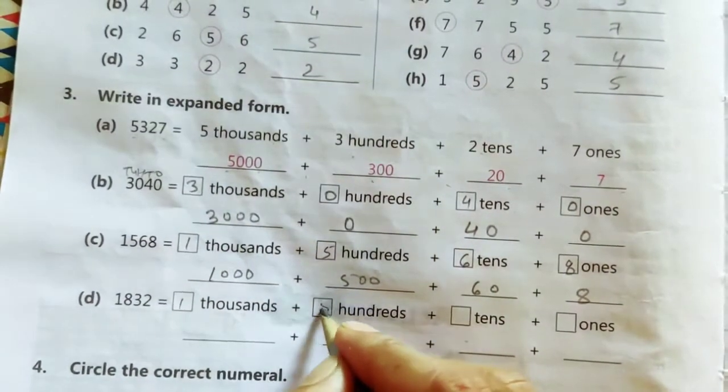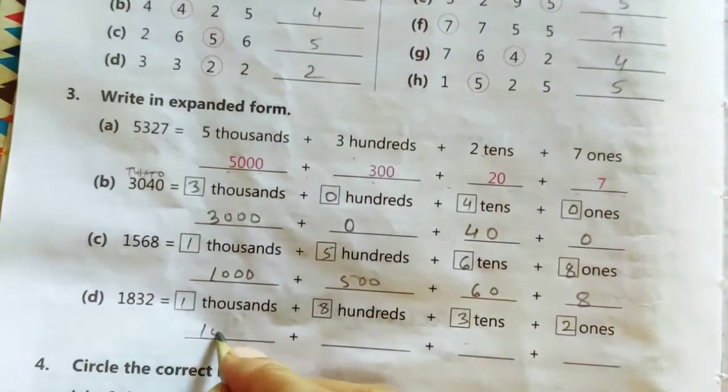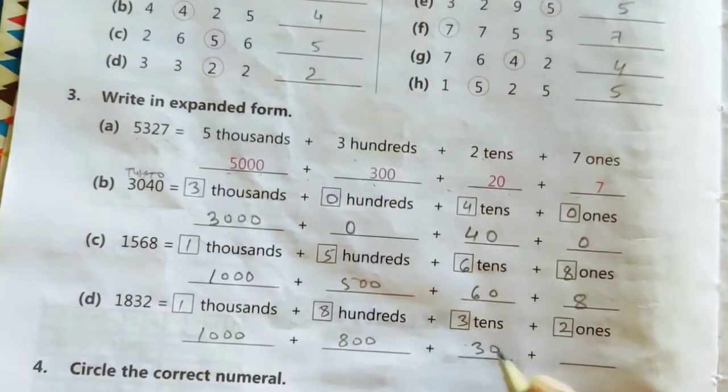And the last one, 1, 8, 3, 2. It will be 1832.